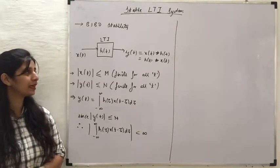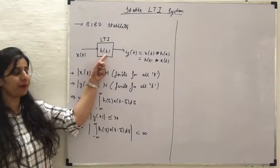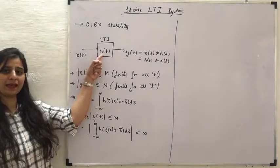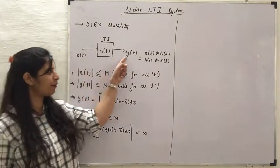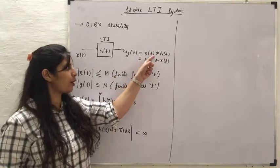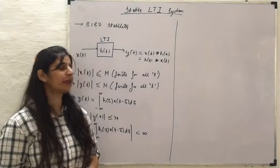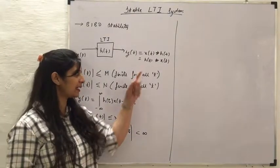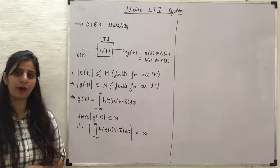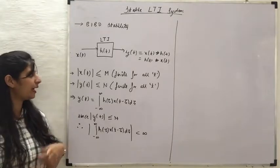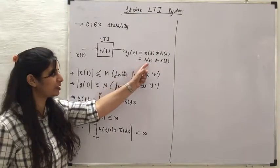The system we are considering is a continuous-time LTI system which has an impulse response given by H(T). We are applying an input X(T) and the response for this input is given by Y(T), which will be X(T) convolved with H(T). From the commutative property of convolution we can write it the other way round also. When we say that for BIBO stability the output should be bounded, that means the value of Y(T) is bounded.